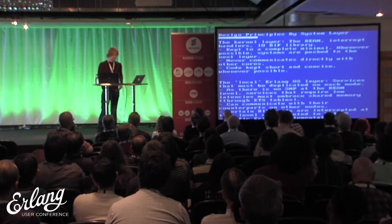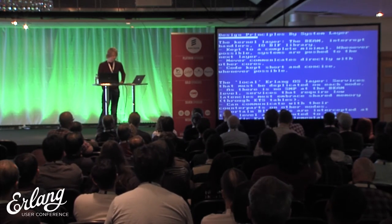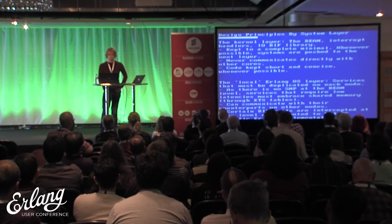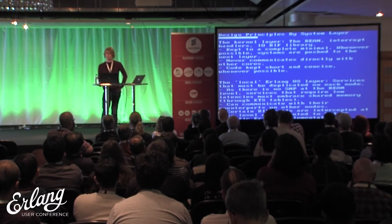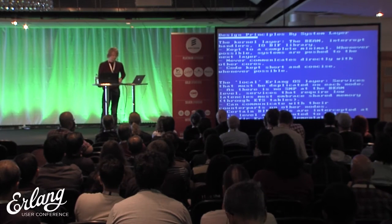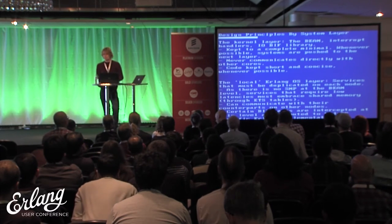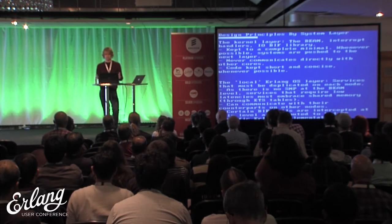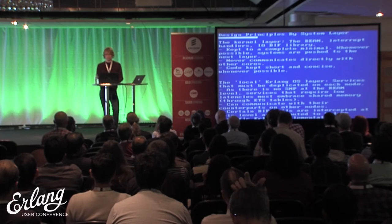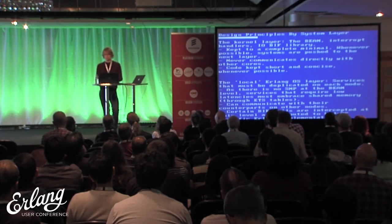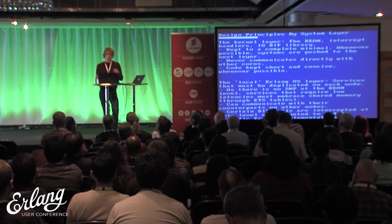There are essentially three layers in our system: the kernel layer, written in C; the local Erlang node — or local BEAM OS node — layer, written in Erlang; and the global layer, also written in Erlang. The general idea is that we push as much work as we can from the kernel layer, where it's much harder to recover from failures, to the Erlang layers. So we keep the code minimal with the kernel and bootloader.